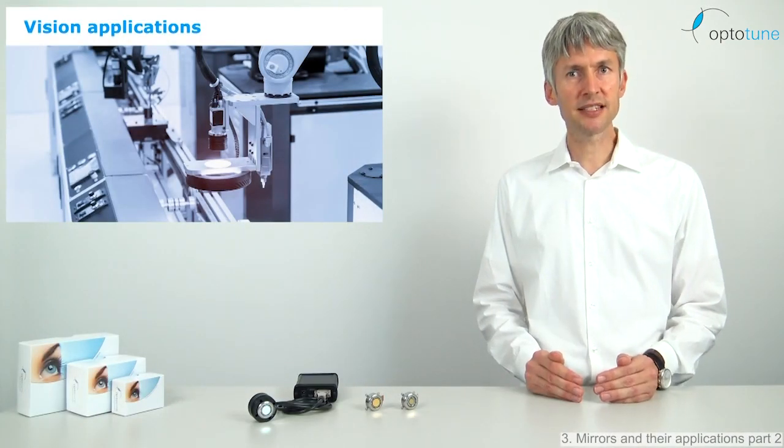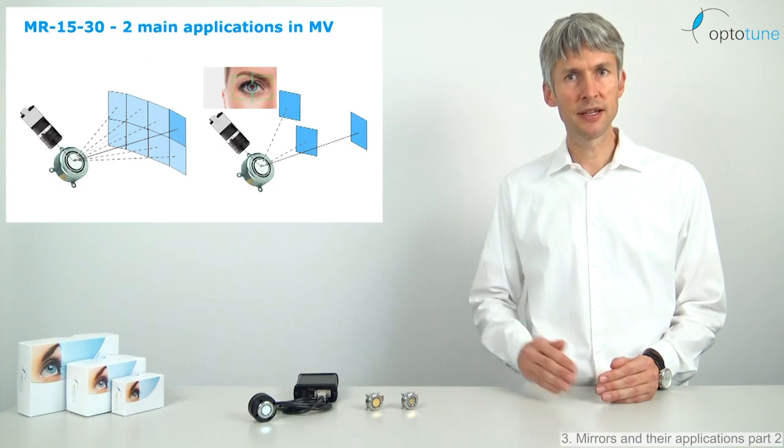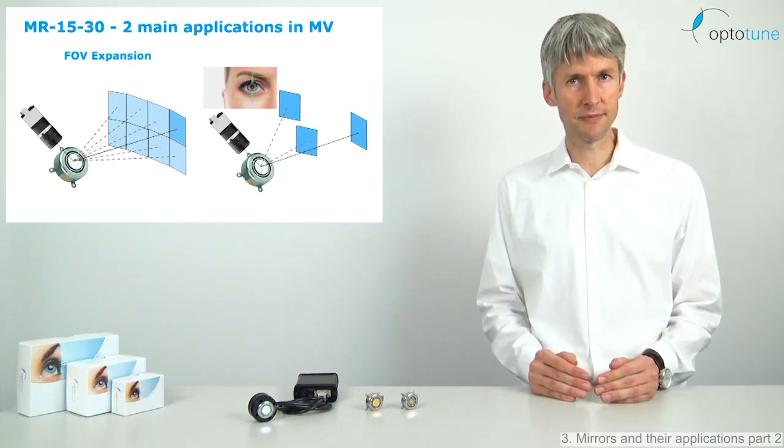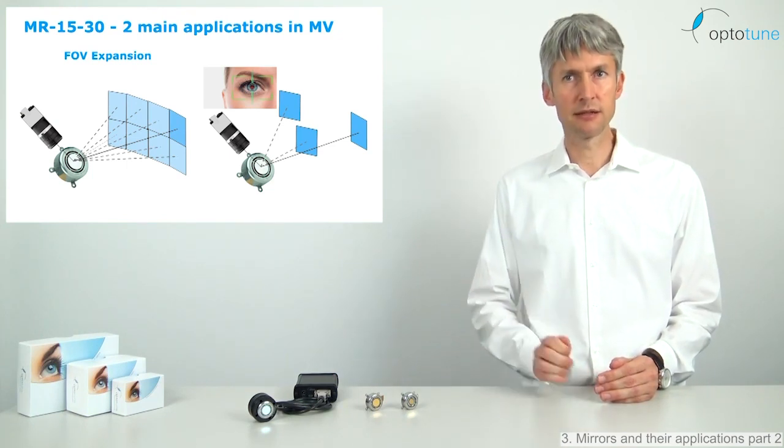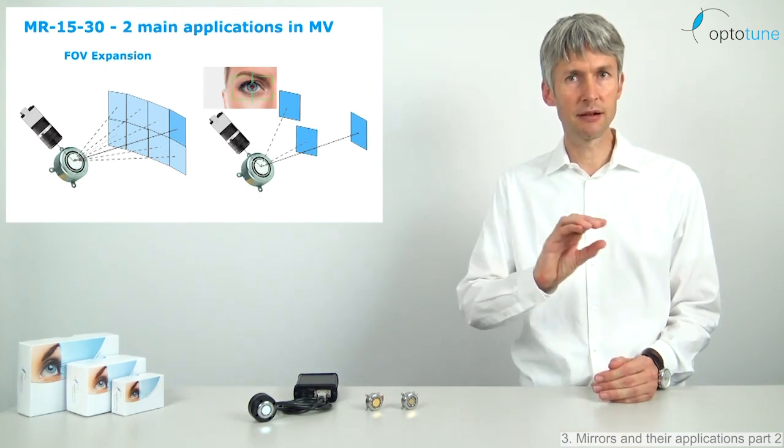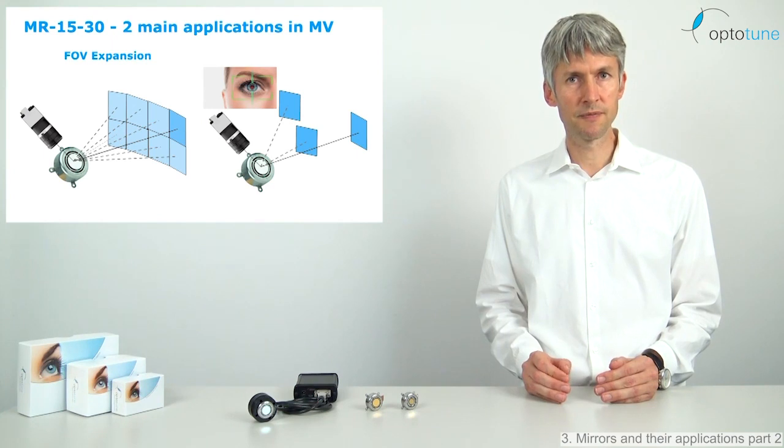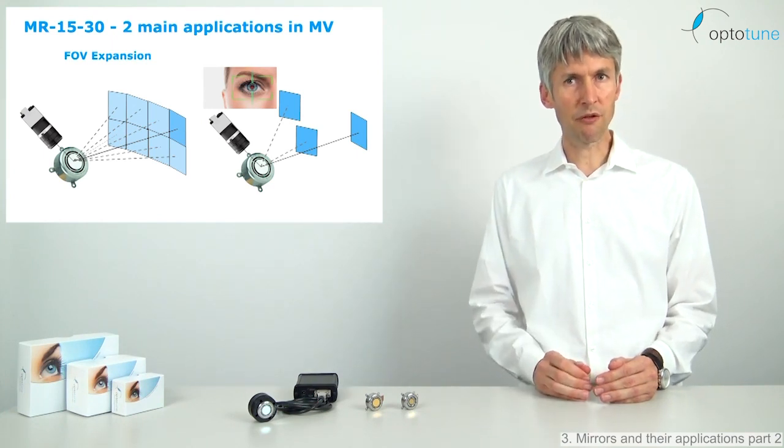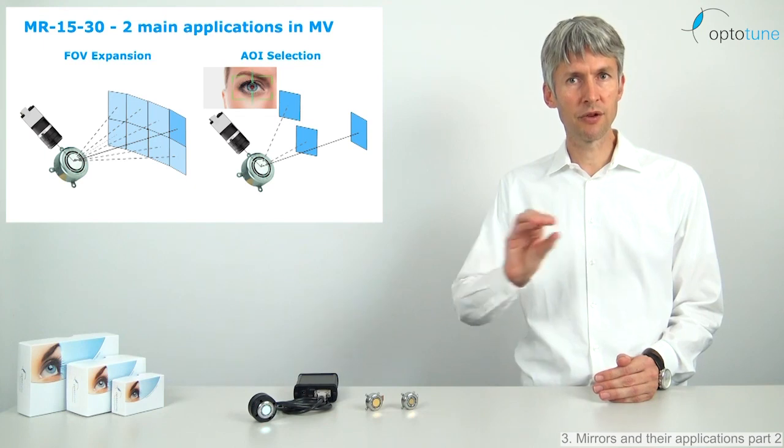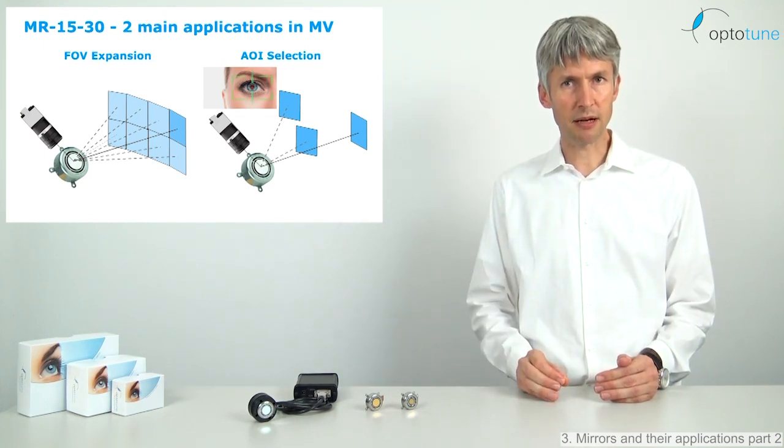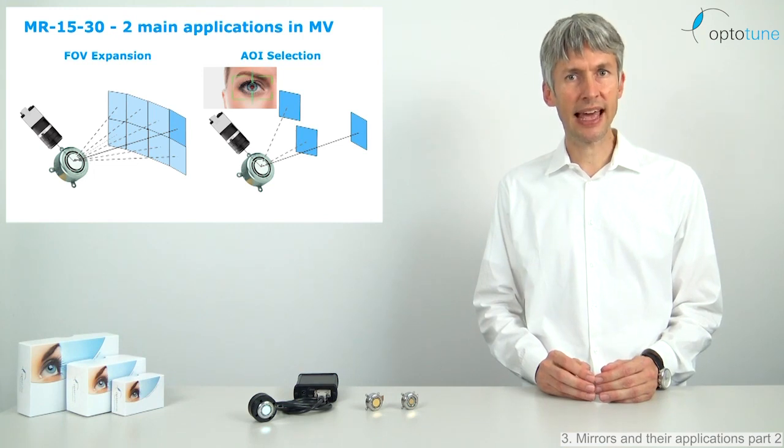The first application of the mirror is in vision systems. There are basically two usage cases. On the left, the principle of field of view expansion is shown. The 2D mirror, placed in proximity of the camera, allows to select the angle the camera is looking at. This allows then to stitch images together. This results in a very high-resolution image by using a standard image sensor. On the right, the principle of area of interest selection is shown. The mirror allows to take a high-resolution image anywhere within a large field of view. This can be of interest for example for eye tracking on distance of a few meters, such as for gaming consoles, iris scanning and surveillance.